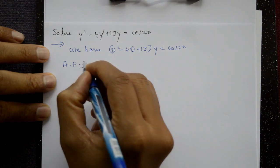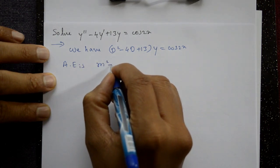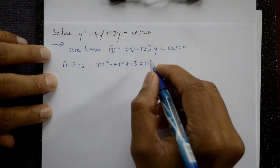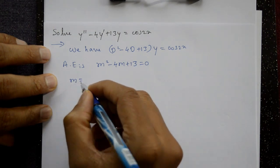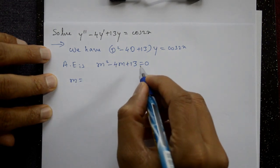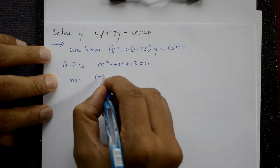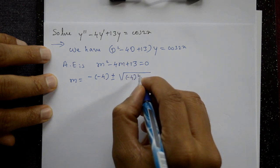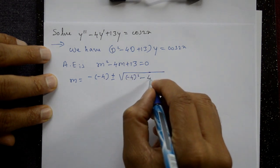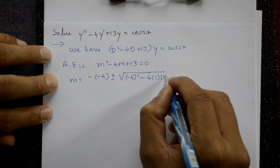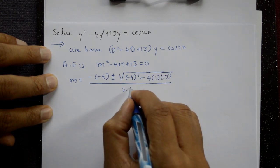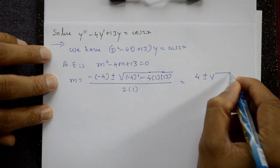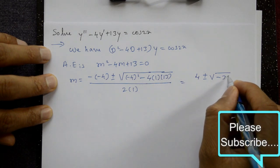The auxiliary equation is m² - 4m + 13 = 0. This is a quadratic equation. Using the quadratic formula: a = 1, b = -4, c = 13. So m = [-(-4) ± √((-4)² - 4·1·13)] / (2·1).